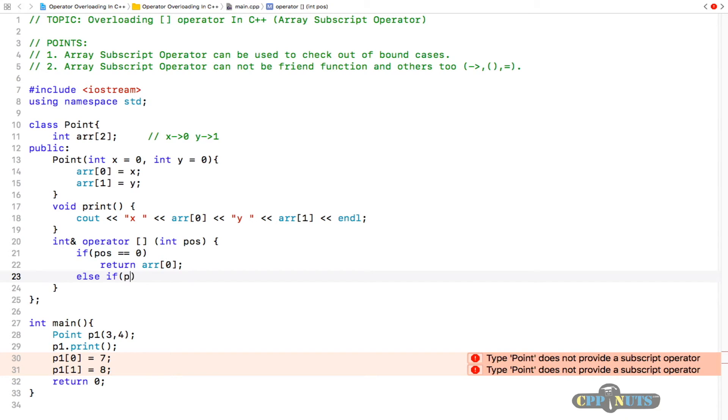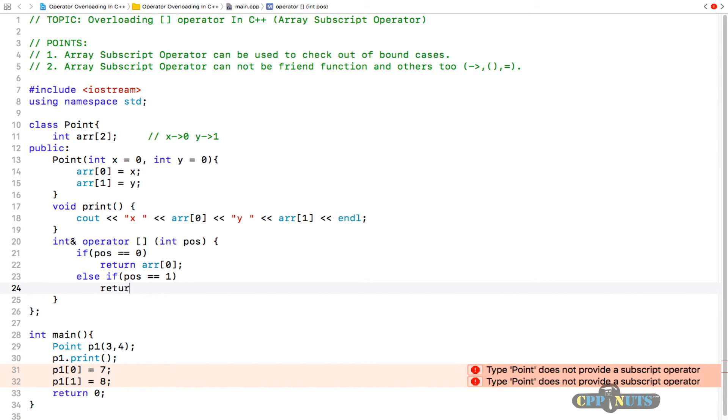Else if position is equal to one, in that case we will return arr[1].